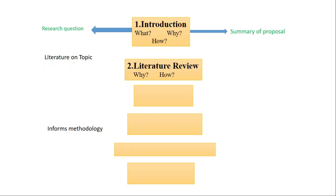The second section is the literature review, and you need to answer: what is the literature on your topic? Next, find a gap — find a research gap from the literature review that you are going to fill in this proposal. After that, you need to study the literature on the method — what method you are going to apply in your research proposal, and present a literature review on the methods being used.